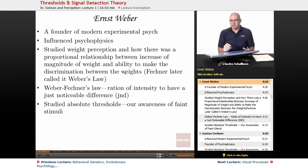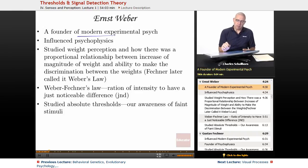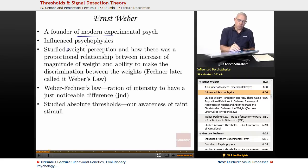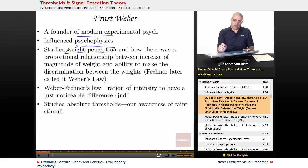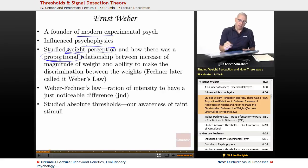Ernst Weber is one of the founders of modern experimental psychology. He influenced psychophysics and studied weight perception. One of the things he discovered was a proportional relationship between the increase of magnitude of weight and the ability to make a discrimination between the weights.